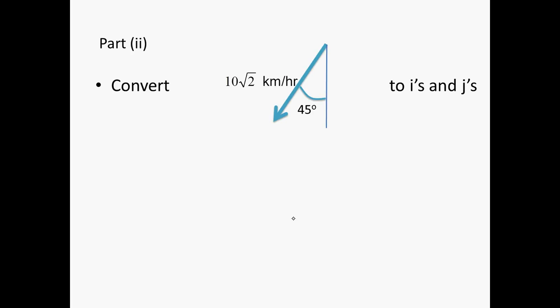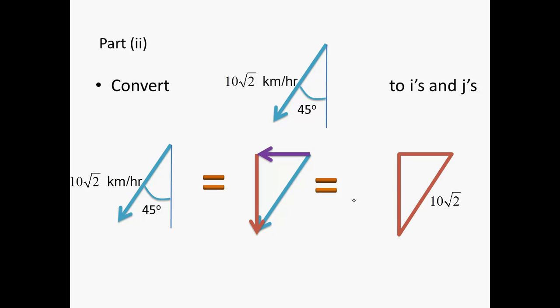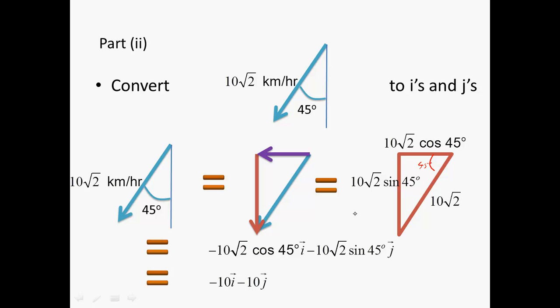Now, part of that too is to convert this into I's and J's. So in order to do that, that vector can be broken into two components, one along the x-axis and one down the y-axis. We know that we can work that out then. We've got the hypotenuse as 10 root 2. We've got the angle here, which is 45, and then this here is the hypotenuse times the cosine of the angle, and this here is hypotenuse times the sine of the angle. So, in this case, when we multiply that and put them into the calculator, we'll find that we get the value of minus 10i minus 10j.